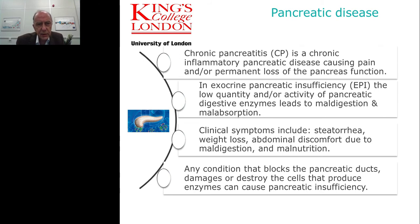Chronic pancreatitis is a chronic inflammatory disease of the pancreas that can cause pain, but also loss of pancreatic function, which may be permanent if the pancreatitis goes on too long. In exocrine pancreatic insufficiency, or EPI, the activity levels of pancreatic enzymes are reduced, leading to failure to break down foods, causing maldigestion and malabsorption because the food is not in a state that can be absorbed. This in itself then leads on to malnutrition.